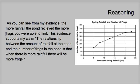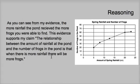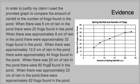If we look back at the evidence, it basically shows that as you get more rainfall, you get more frogs. We can all look at it and know that's it. But I still need to list the evidence and explain what's going on. Some teachers may require you to put a lot more of your evidence in the reasoning. I'd be fine with you simply summarizing the graph — meaning, as you can see from my evidence, the more rainfall the pond received, the more frogs you were able to find.